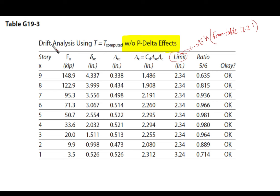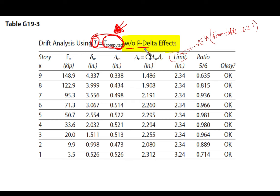The risk category for the building is Risk Category 3, the importance factor I_e is 1.25, the seismic design category is D, the response modification coefficient R is 8, and the deflection amplification factor C_D is 5.5. Now let's go to the drift analysis, which is based on the computed period T without P-Delta effects.